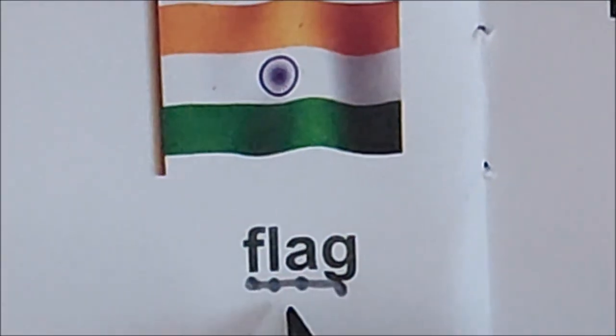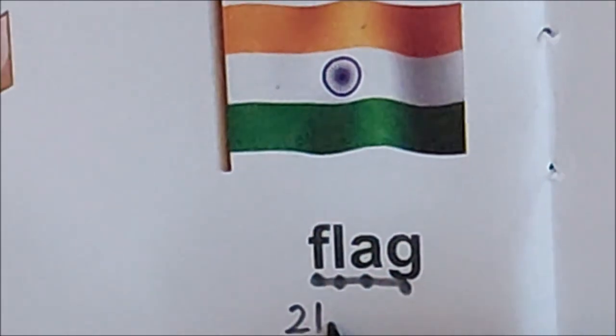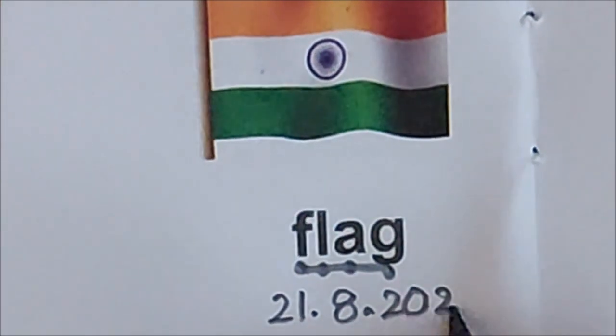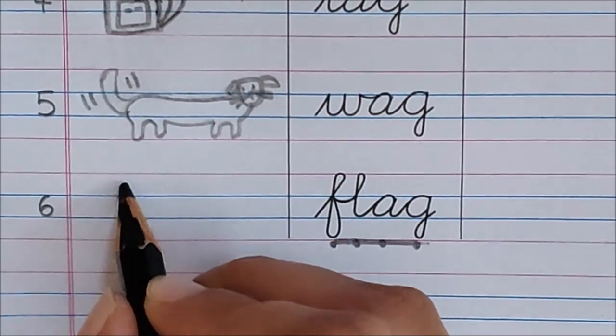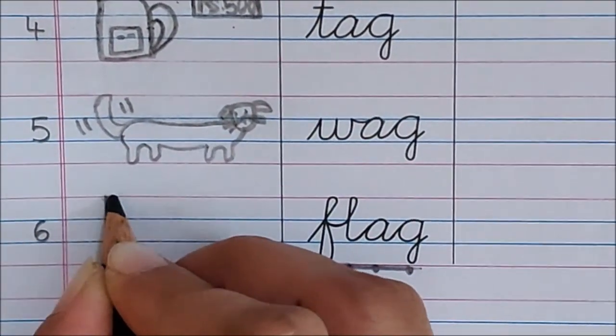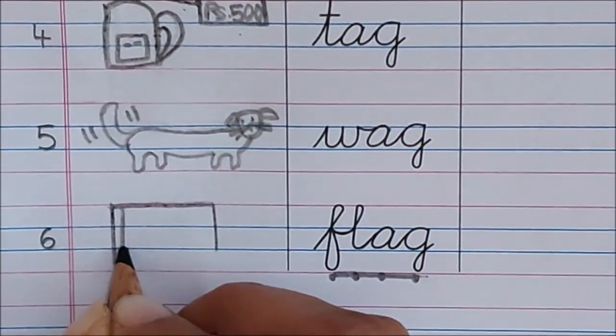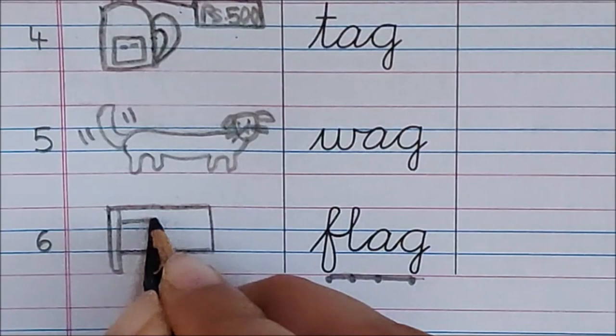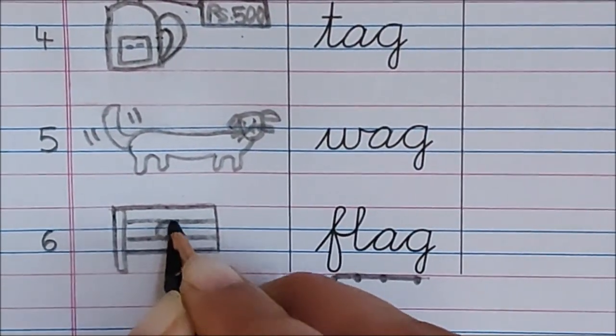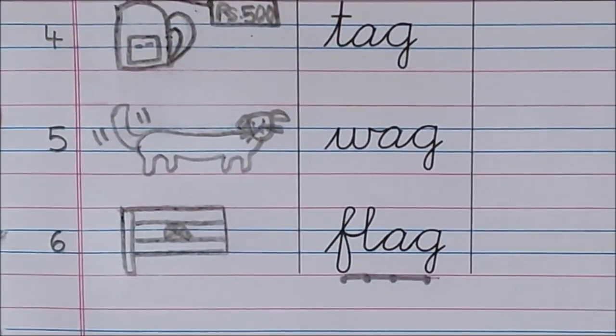Now, children, below the flag word, write down today's date. 21 dot. 8 dot. 20. 20. Now, draw a flag here with me, children. This is India's flag. And what is in between? Ashok Chakra. This is India's flag.